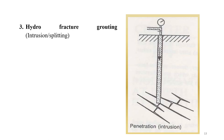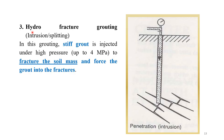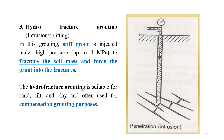The third type is hydrofracture grouting, also called intrusion or splitting grouting. A stiff grout is injected at high pressures of up to 4 MPa to fracture the soil mass and force grout into the fractures. Hydrofracture grouting is suitable for sand, silt, and clay, and is often used for compensation grouting purposes to fill vacant spaces that have formed.